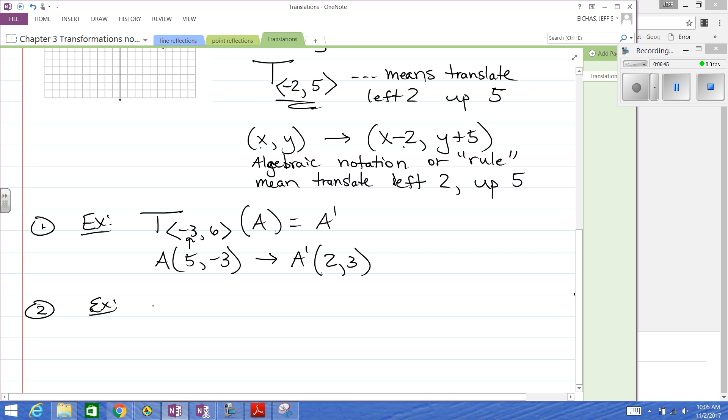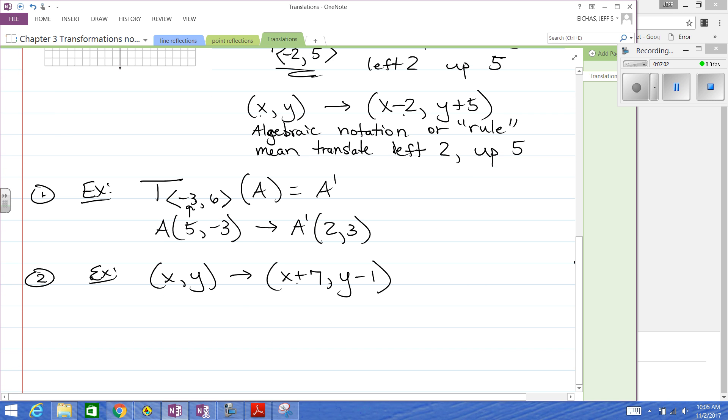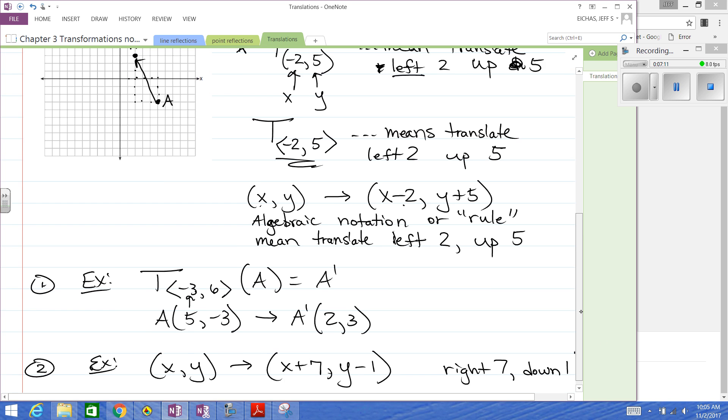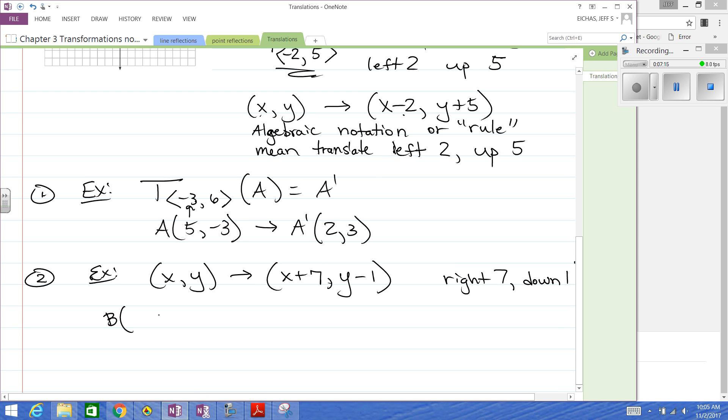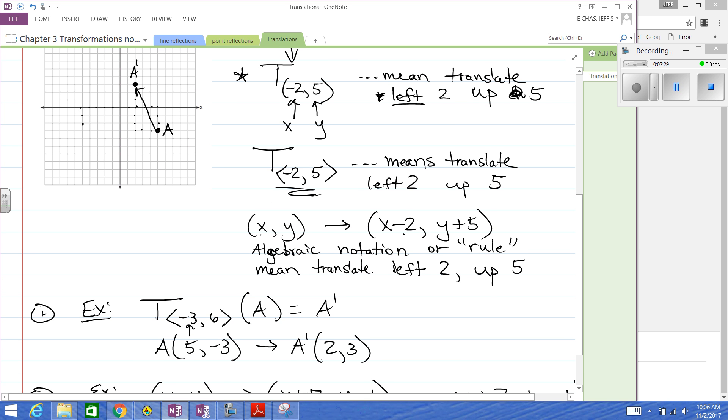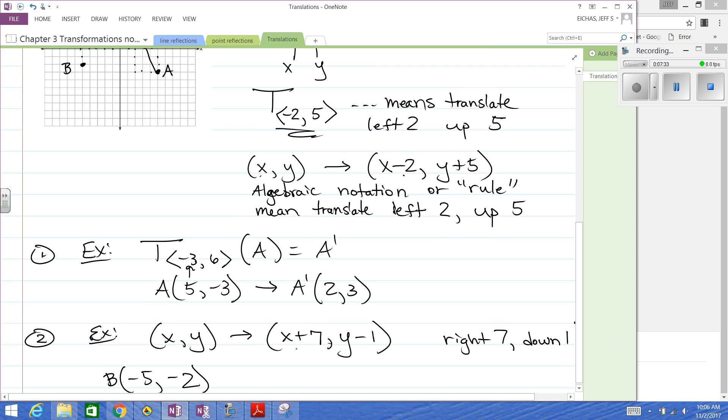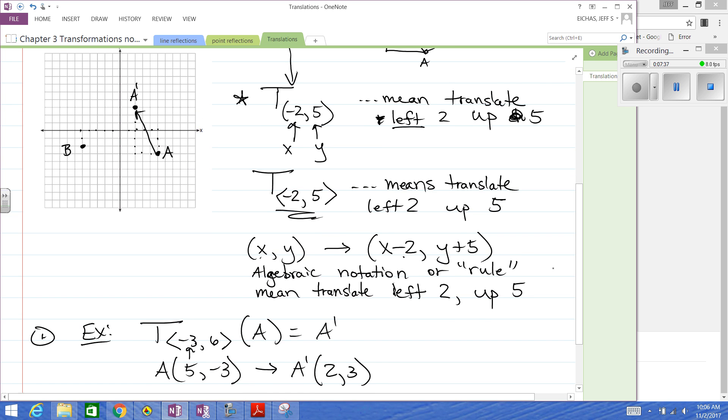So another example. Let's go with this rule. So what this is going to make us do is, algebraically, we're going to go right 7, because we're adding 7 to the x value. And then we're going to take everything, and we're going to go down 1. So we could use the same graph. Let's throw B over in the third quadrant. What if we go negative 5, negative 2. Negative 5, negative 2 is B. If we apply this one, that's going to take us right 7, down 1, from there. Right 7, down 1. There's B prime.